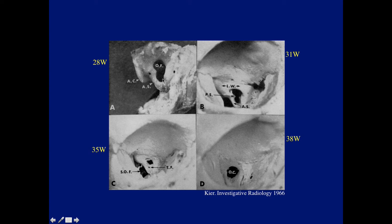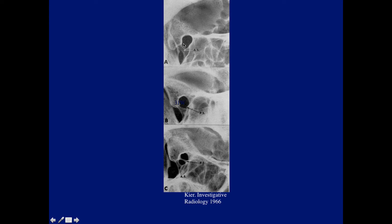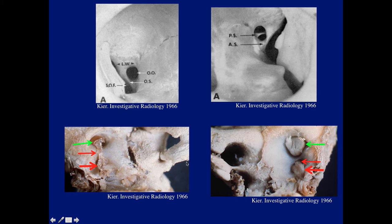I examined a number of fetal optic canals, and as you can see here, at the earliest stage the optic canal has somewhat of a keyhole type shape and progressively gets rounder as the optic strut that separates the optic canal from the superior orbital fissure develops a second segment. Here are some radiographs showing the same thing — early on, a 28-week keyhole-shaped canal — and later it becomes rounded as the second segment of the optic strut develops. Depending on the development of the optic strut, you may have a keyhole shape in the adult, the normal rounded appearance, or a split canal.